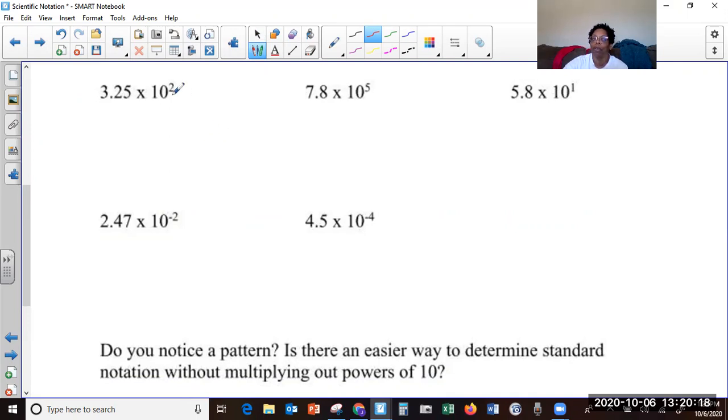Well, remember the exponent tells you. It says positive two. So we want to move forward two places with the decimal. And so the next decimal takes this new place. So it becomes 325.